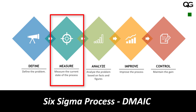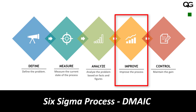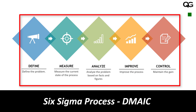First, you define the problem — for example, your weld repair rate is high or your customer satisfaction level is low. Then you measure it: what is the percent defective in welding, or what is the client satisfaction level? Next, you analyze those measurements, looking at root causes using tools like fishbone diagrams, histograms, or Pareto charts. Then you improve the existing process. The final step, Control, is where you put controls in place to maintain the new improved level and prevent the process from falling back.